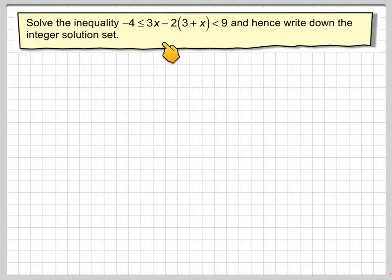Solve the inequality -4 ≤ 3x - 2(3 + x) < 9 and hence write down the integer solution set.